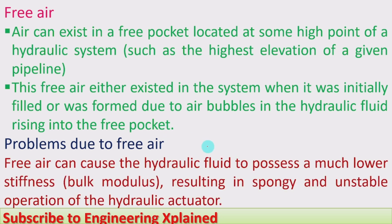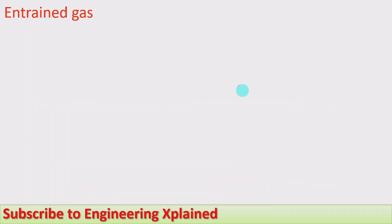Free air can cause the hydraulic fluid to possess a much lower stiffness, with a lower bulk modulus, resulting in spongy and unstable operation of the hydraulic actuator. The stiffness reduces and the fluid becomes spongy — that is the main difficulty associated with free air.